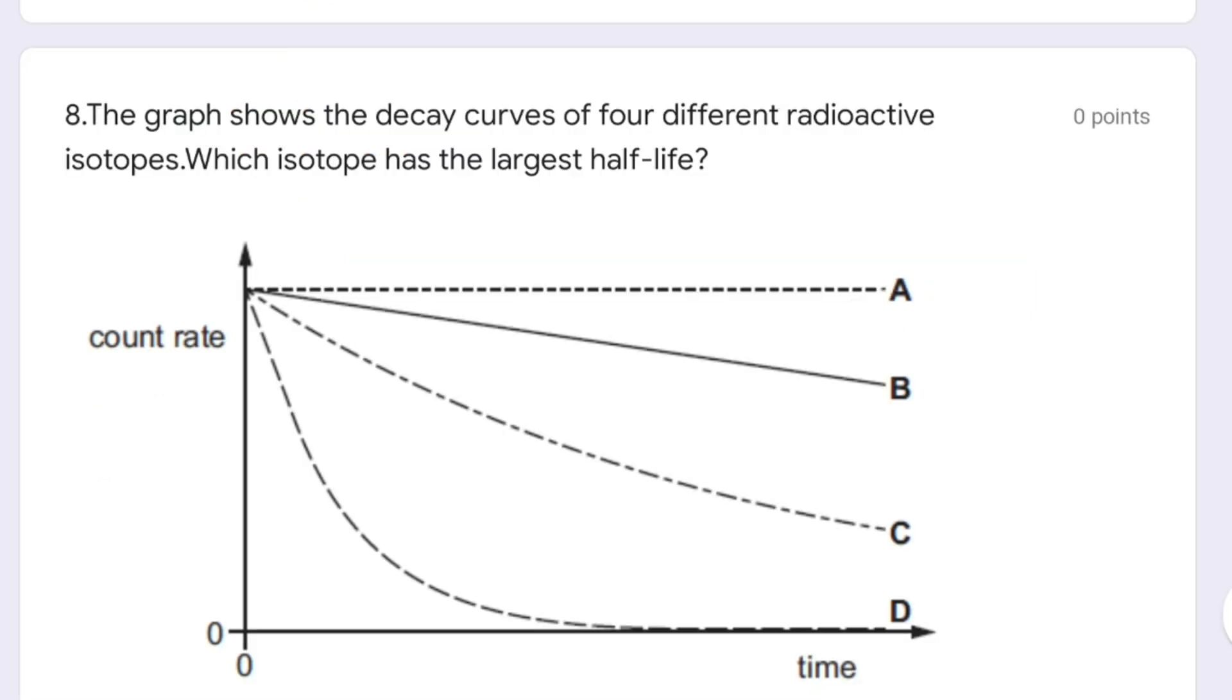This is another type of question. The graph shows the decay curves of four different radioactive isotopes. Which isotope has the largest half-life? When we compare A, B, C, and D, A is having the largest half-life whereas D is having the least.